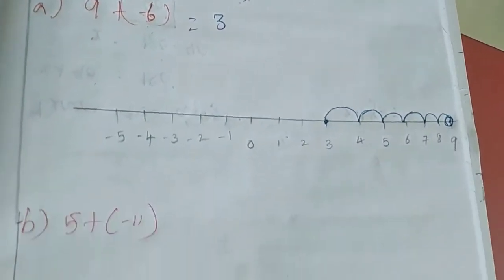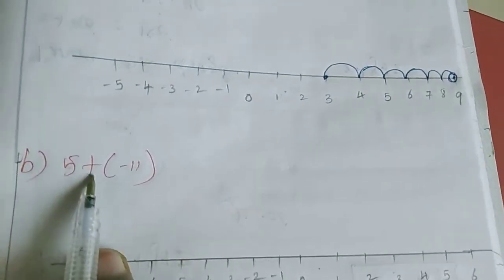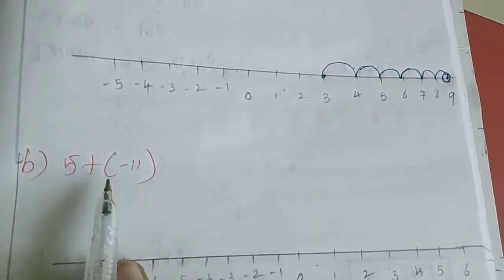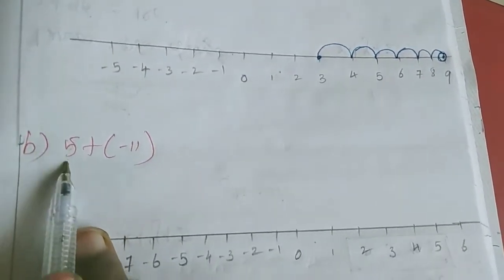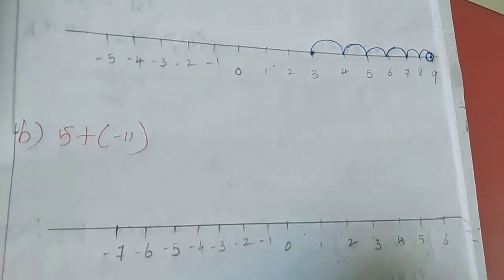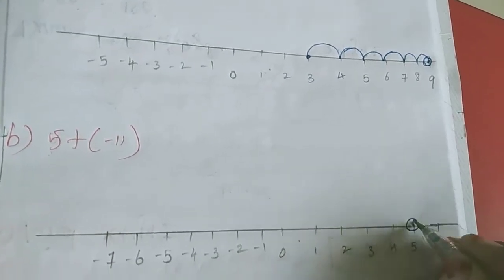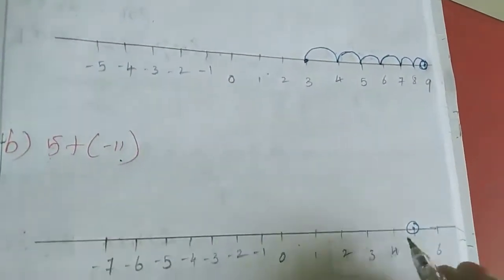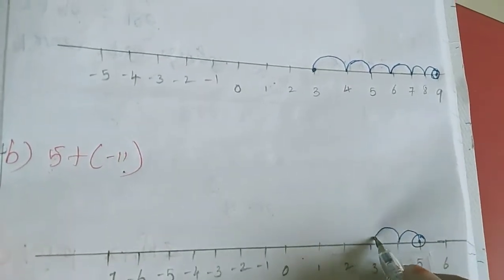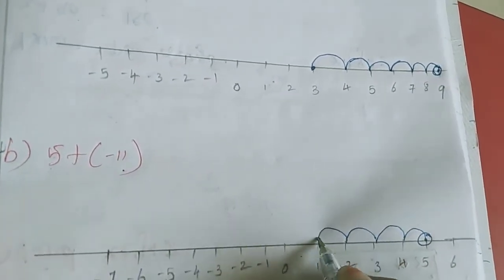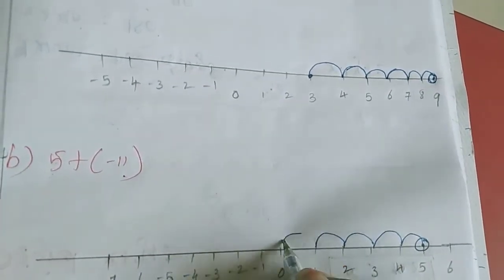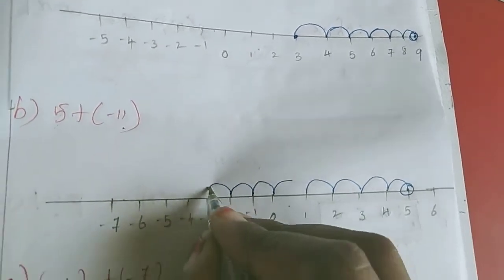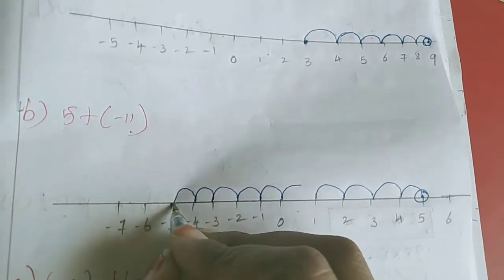Second sum: 5 plus minus 11. This is also in symbol form, so I am going to mark the first number. First number is 5 — marked here. Minus 11, so we will move to the left side: 1, 2, 3, 4, 5, 6, 7, 8, 9, 10, 11. I reach minus 6, so the answer is minus 6.